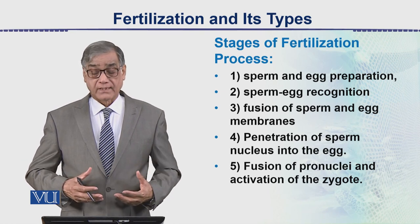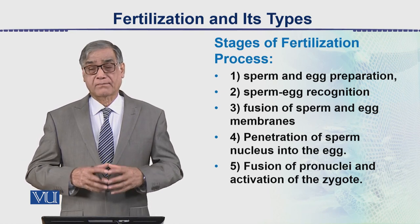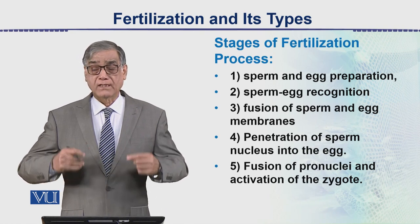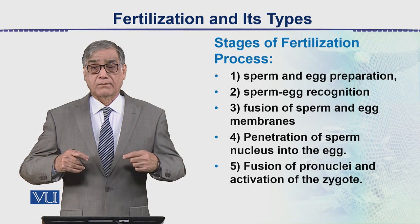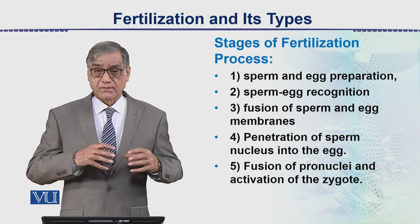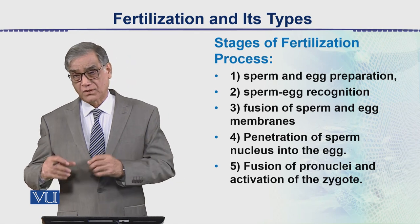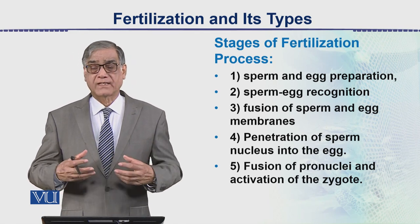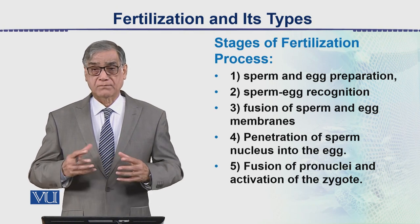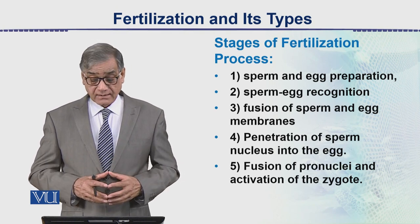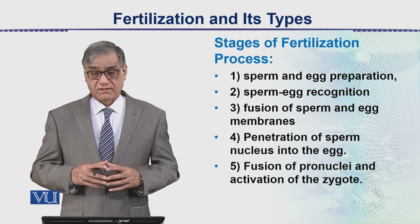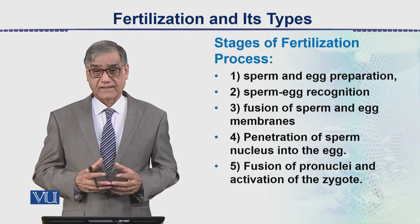The stages of the fertilization process: first is the preparation of sperm and egg. This preparation means that within the reproductive organs, sperm formation and egg formation occur, and this is usually as a result of meiosis, producing haploid sperms and eggs. Then there is sperm-egg recognition, which is a very important step.